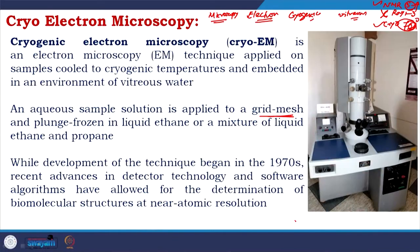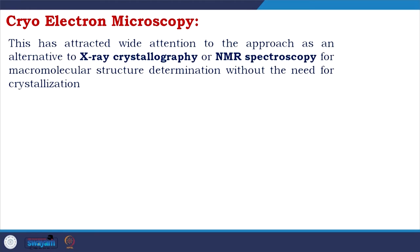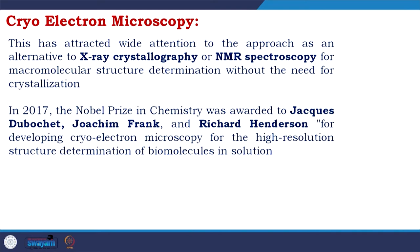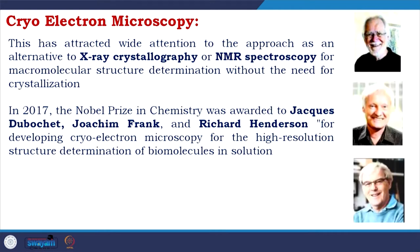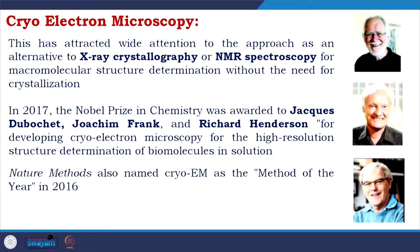Cryo-EM has attracted wide attention as an alternative to X-ray crystallography or NMR spectroscopy for macromolecular structure determination, and one of the biggest advantages is that you do not need a crystal. In 2017, the Nobel Prize in Chemistry was awarded to Jack Dubochet, Joachim Frank, and Richard Henderson for developing cryo-EM for high-resolution structure determination of biomolecules in solution. Nature Methods also named cryo-EM the Method of the Year in 2016.